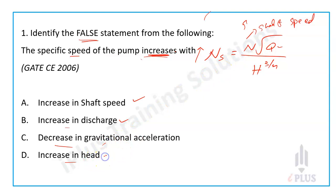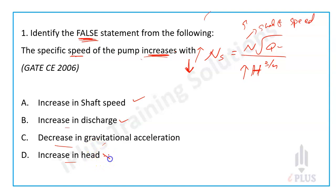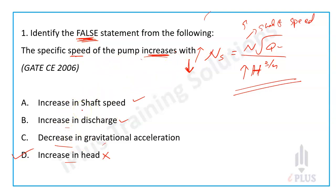Now increasing head — head is in the denominator, so increase in head will decrease specific speed, not increase it. Therefore, option D (increase in head) is the false statement and is the right answer.